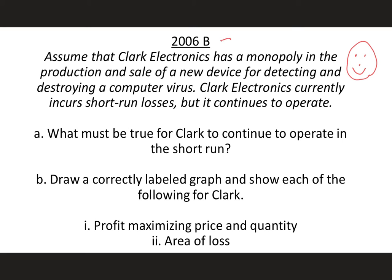So this is a question, a free response question that is from the AP College Board. Assume that Clark Electronics has a monopoly in the production and sale of a new device for detecting and destroying a computer virus. Clark Electronics currently incurs short-run losses but continues to operate. And this second part of the question should give us some clues as to what types of questions the College Board will ask because they're telling us this is a firm that is continuing to operate so it's not shutting down. So we know some things about that and it's also a firm that's making a loss, and that helps us be able to understand what kind of status Clark Electronics is in.